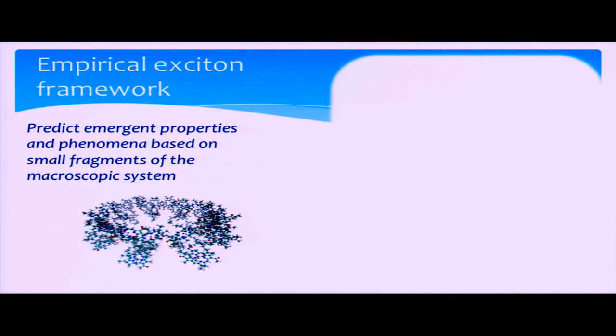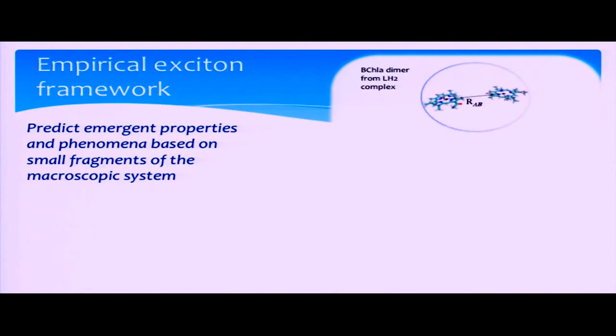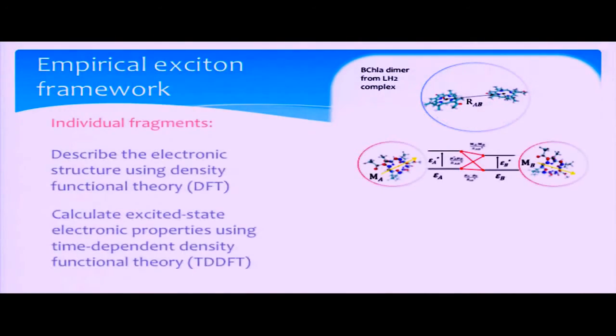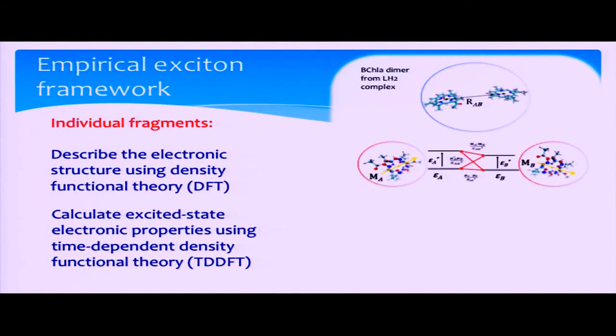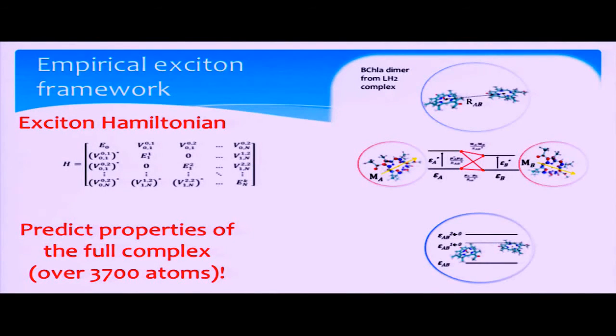As an example, I've shown this light harvesting complex 2 right here. We could actually decompose the system into individual chromophores, which together make up the entire structure. By characterizing each individual chromophore and calculating both the ground and excited state electronic properties, we can predict the properties of the full system using what is known as an exciton Hamiltonian. This Hamiltonian describes the site energies and their interactions.